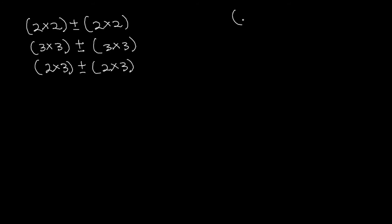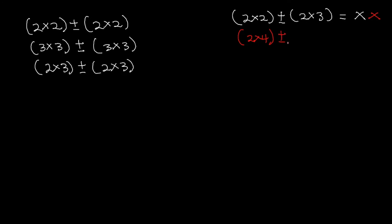In cases where the order of the matrices are not the same — for instance, if we have a 2x2 matrix and we try to add or subtract it from a 2x3 matrix — this is not possible. We cannot add or subtract a 2x4 matrix to a 3x3 matrix, or a 4x4 matrix to a 4x3 matrix. We can only add matrices that are of the same order.